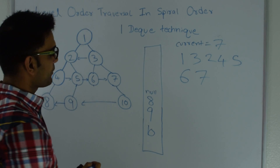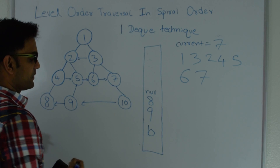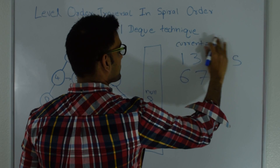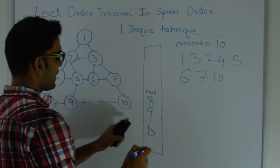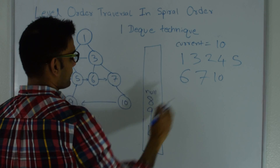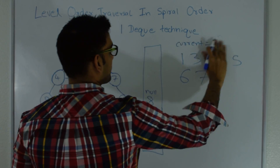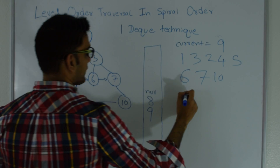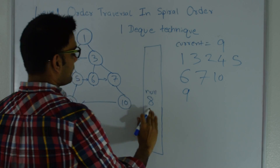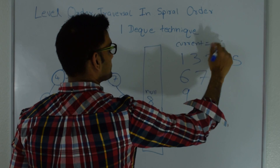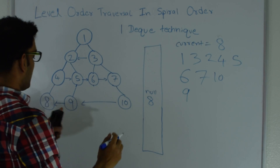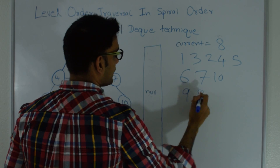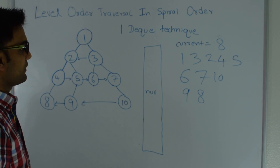As soon as I hit a null from the top of the queue, I start looking from the bottom. I take 10 out — current becomes 10; no children, just print 10. Then current becomes 9; no children, print 9. Finally current becomes 8; no children, print 8. This is my spiral traversal.